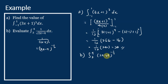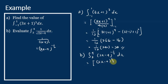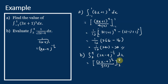So we write this as (2x minus 4) to the power of negative one half dx and integrate it. This becomes (2x minus 4) to the power of one half over the differentiation of the expression inside the bracket, which is 2. So it's 1 over (one half times 2), from 3 to 4. The two values cancel.